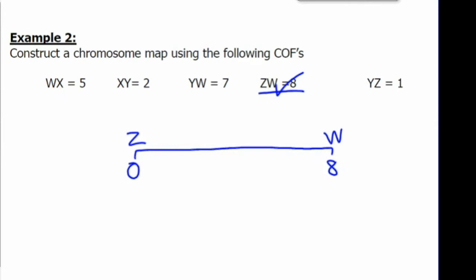And then we'll choose a letter that has reference to both Z and W. Let's look at Y. Y and W are 7 apart. And Y and Z are 1 apart. So let's place Y at number 1. And then we'll check. Is that also 7 away from W? Yes, it is. Because 1 plus 7 equals 8.